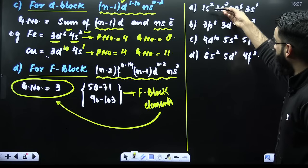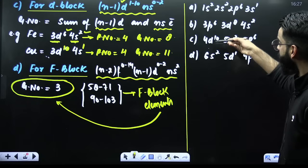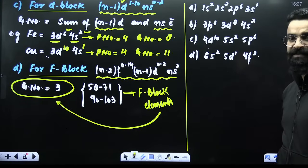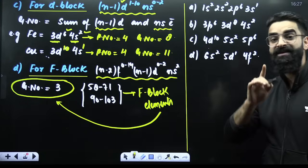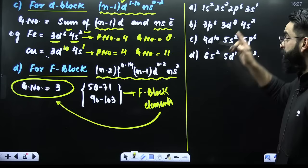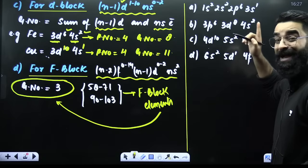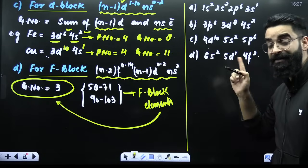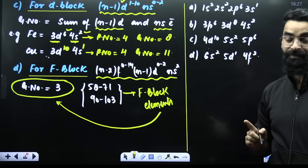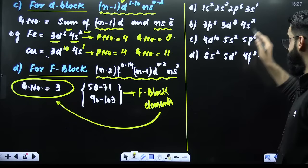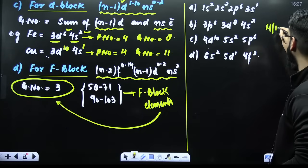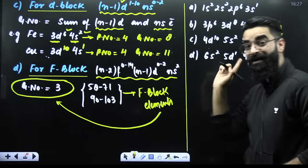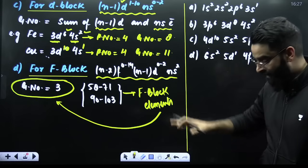Here are some questions with different electronic configurations. I want you to predict their period number and group number and let me know the answers in the comment section of this video. These are your four homework questions and I would expect the answers in the comments.